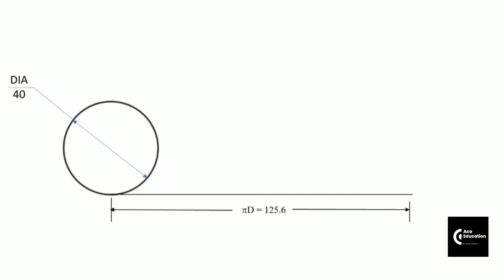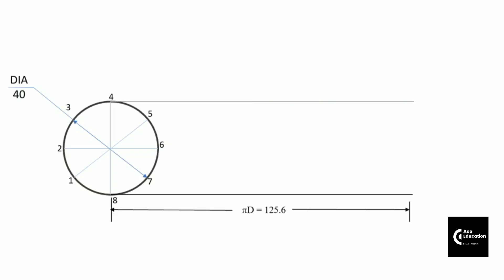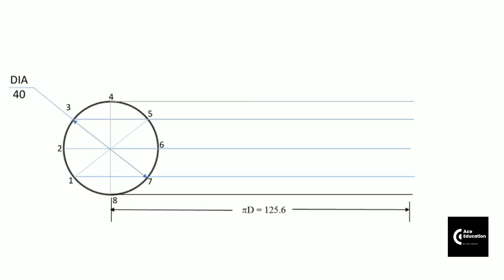Now it's time to divide the circle into equal number of parts. Here I am going to divide this circle into 8 equal parts and name these points 1, 2, 3, 4, up to 8. From those points on the circumference, draw straight horizontal lines moving towards the right-hand side. The sense of rotation will be clockwise.